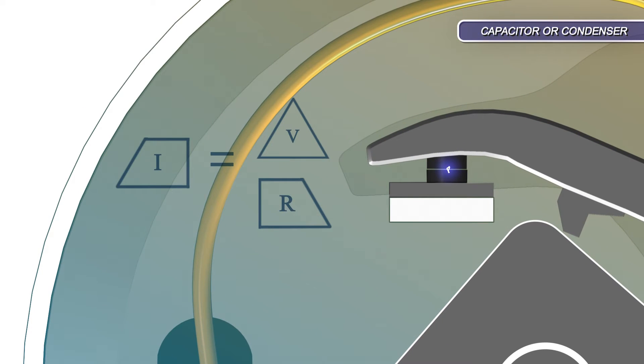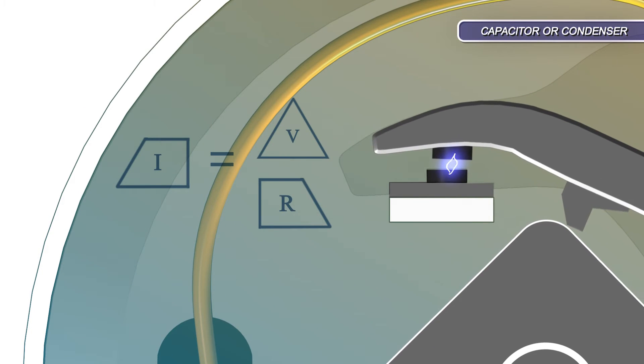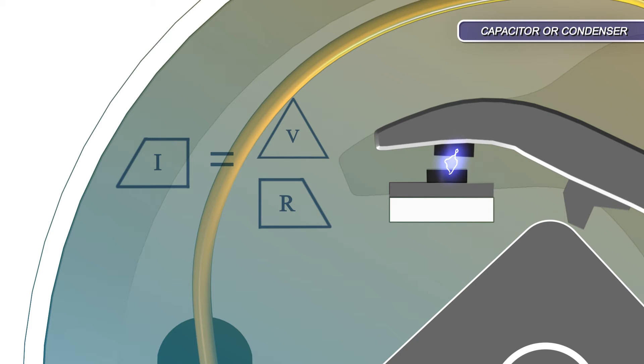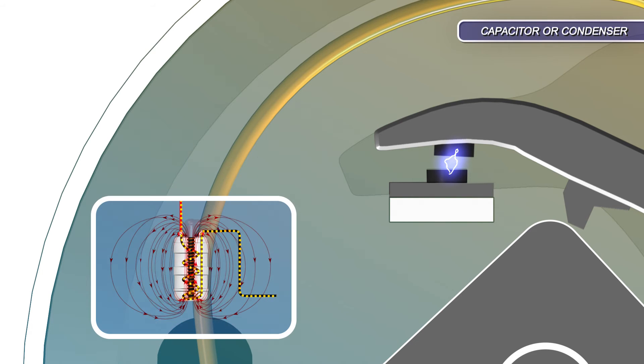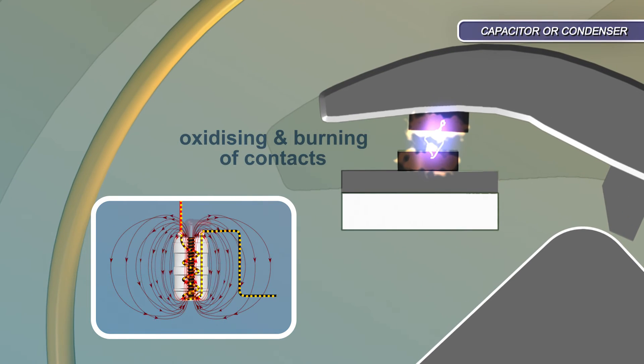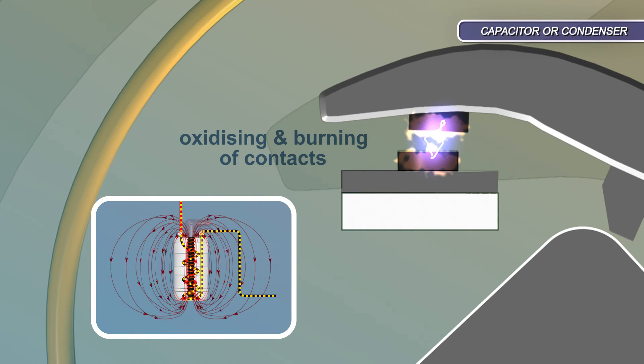When the contact set starts to open, a high current will continue to flow across the air gap until the resistance becomes too great. This continuous current flow opposes the collapse of the magnetic field in the primary windings and causes oxidizing and burning of the contact set.